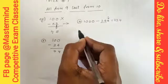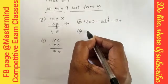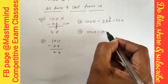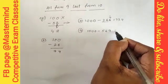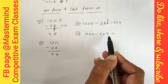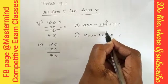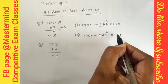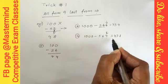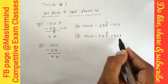Now try one more: 1000 minus 569. So this is all from nine last from ten. 10 minus 9 is 1. Very good. 9 minus 6 is 3, 9 minus 5 is 4. So the answer is 431.